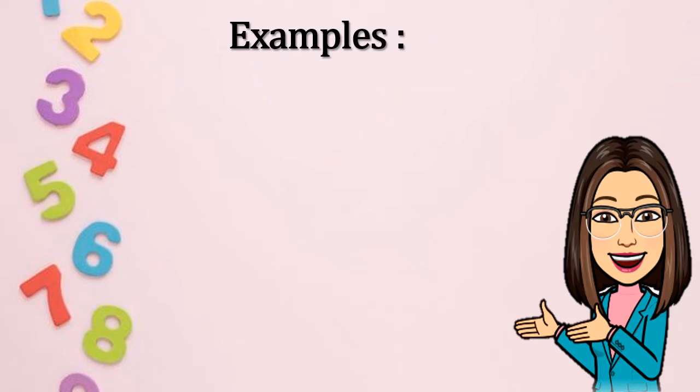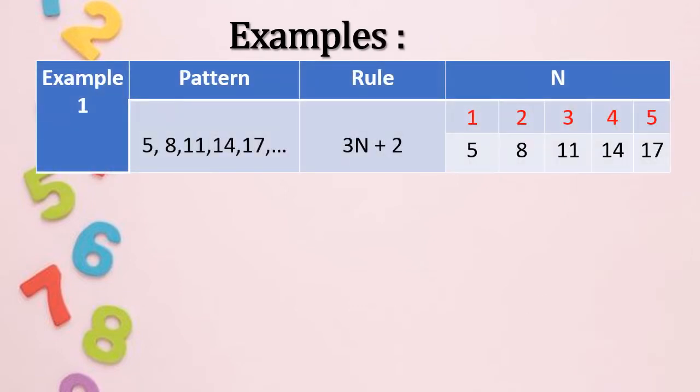Here are the examples. Example number one: we have a pattern 5, 8, 11, 14, 17, dot dot dot, following the rule 3N plus 2. So how were we able to get the next terms with the given pattern? So N here are the counting numbers, and this is 1, 2, 3, 4, and 5.